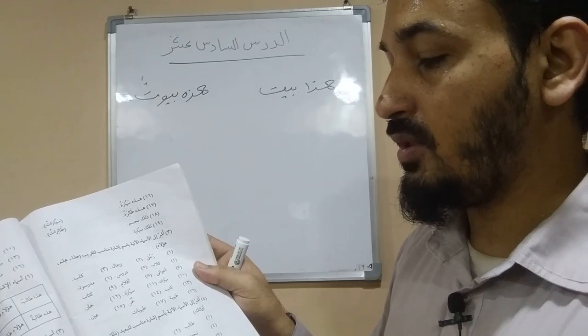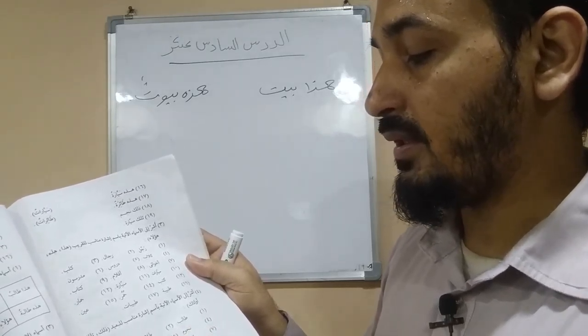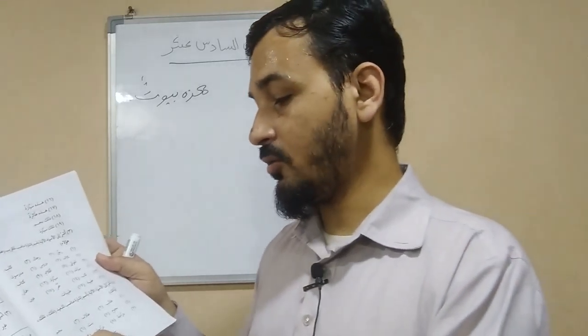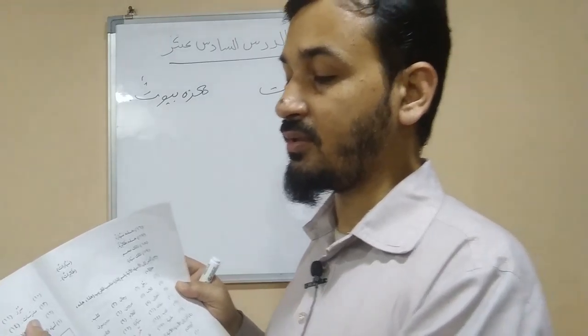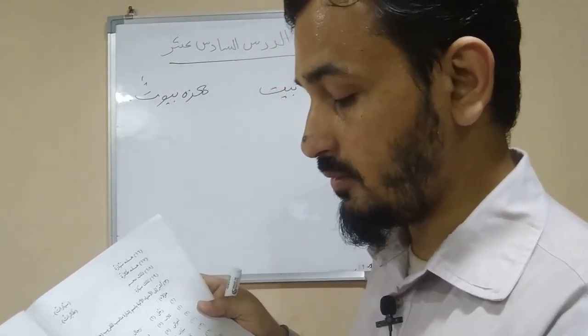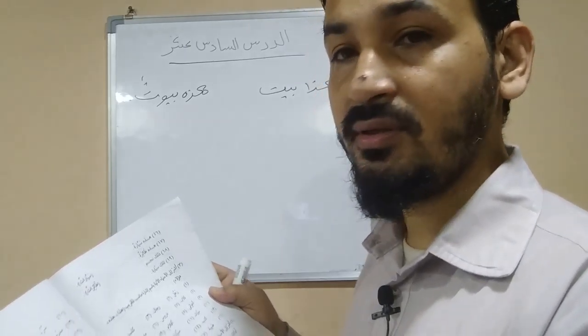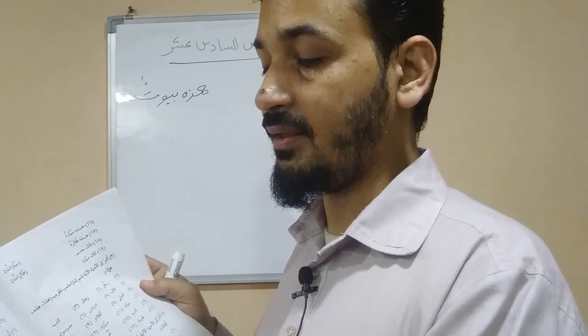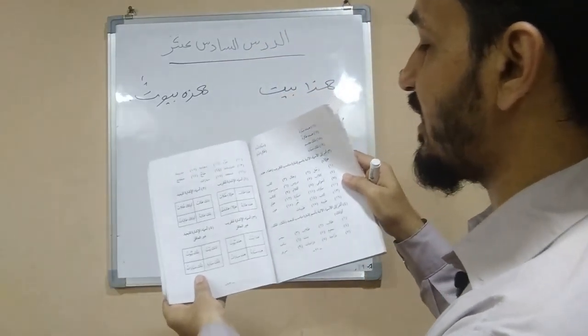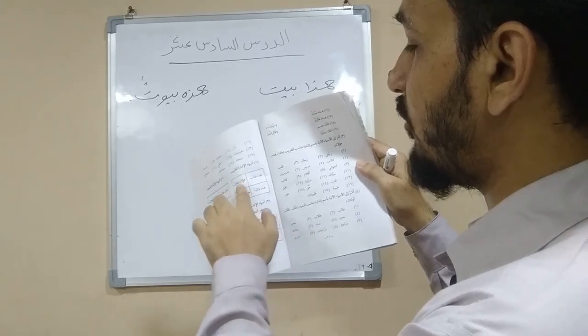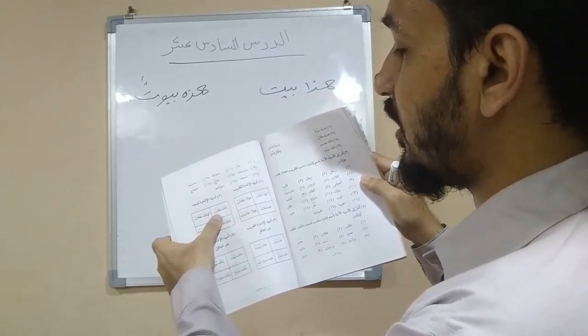Now exercise number four: point to the following nouns using the appropriate far demonstrative — ism al-ishara lil-ba'id: dhalika, tilka, ula'ika. Fill in the blanks: talib → 'dhalika talib'; tullab → 'ula'ika tullab'; najm → 'dhalika najm'; nujum → 'tilka nujum'; bint → 'tilka bint'; banat → 'ula'ika banat'; darrajah → 'tilka darrajah'; darrajat → 'tilka darrajat'; sarir → 'dhalika sarir'; sirar → 'tilka sirar'; dajajah → 'tilka dajajah'; madrasah → 'tilka madrasah'; mudarrisat → 'ula'ika mudarrisat'; hajj → 'dhalika hajj'; hujjaj → 'ula'ika hujjaj'; masjid → 'dhalika masjid'; sayyarat → 'tilka sayyarat.'